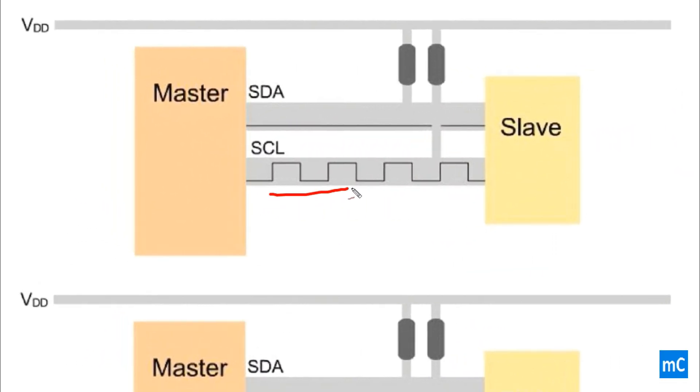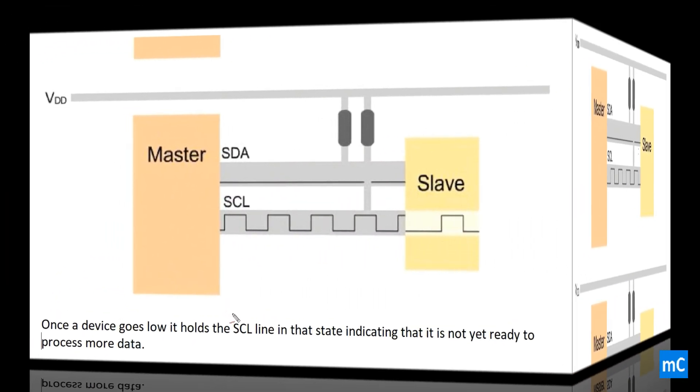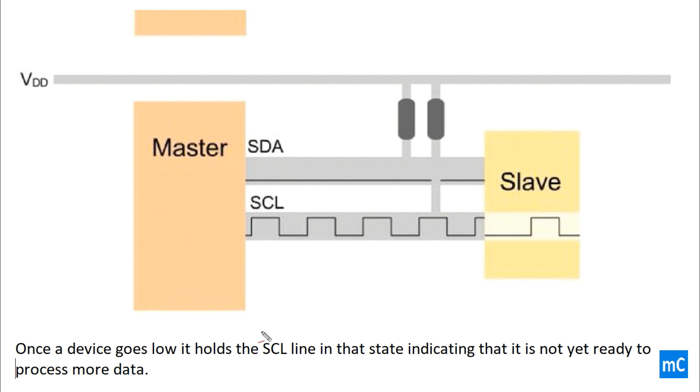Then we can see the clock is given and then here the data is being sent. Once the device goes low, it holds the SCL line in that state indicating that it is not yet ready to process more data.